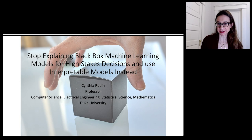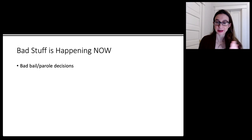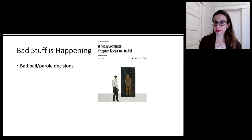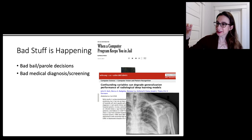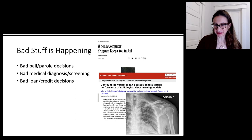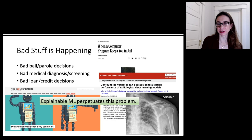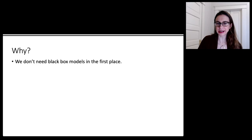Hi, my name is Cynthia Rudin and I'm going to tell you why we should stop explaining black box machine learning models for high stakes decisions and use interpretable models instead. Bad stuff is happening now: there are bad bail and parole decisions being made because people type the wrong number into a black box model, letting dangerous people go free and keeping people in prison who don't deserve to be there. We have problems where algorithms depend on factors that are not allowed, like in medical diagnosis where models depend on words in the image rather than the medical content. We also have bad credit and loan decisions being made on faulty information. I claim that explainable machine learning actually perpetuates this problem.